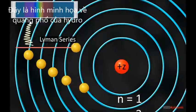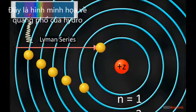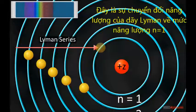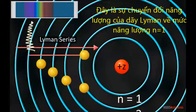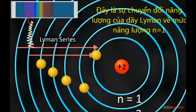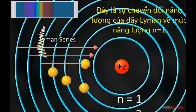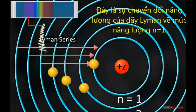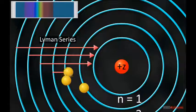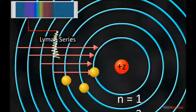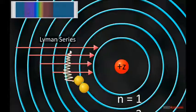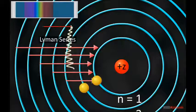When a transition from higher orbits to the first orbit occurs in the atom, Lyman series is obtained. The values of frequencies obtained in this transition lie in the ultraviolet region of the electromagnetic spectrum.